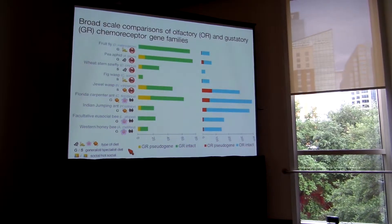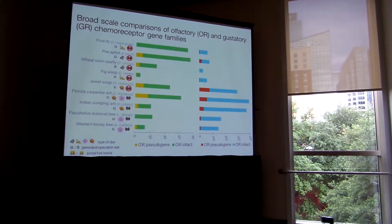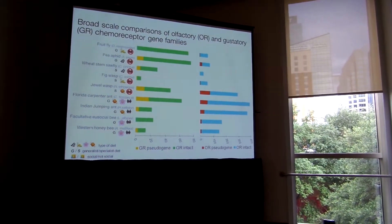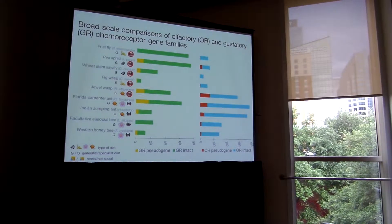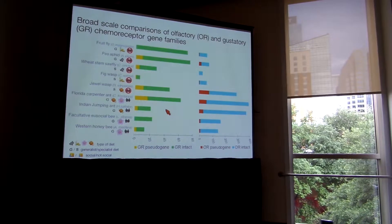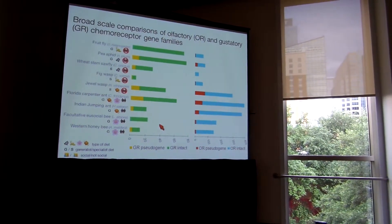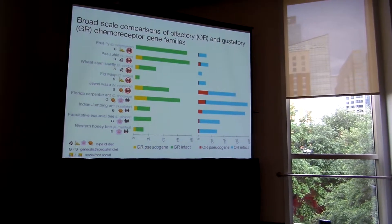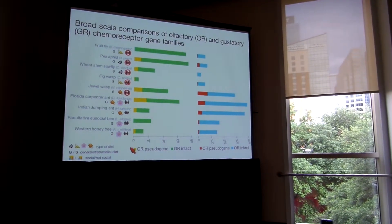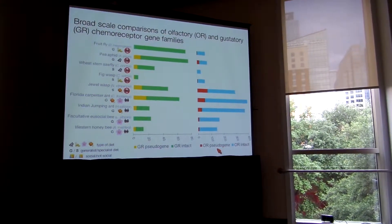I try to convey the ecological information with these figures. I consider the diet, the diversity of diet, and the sociality of each taxa. Going back to insect nectomorphs, if we compare this group, you see that although they all have this resource in common, there isn't really any pattern in the size of their gene families, the proportion of olfactory receptors, or the proportion of pseudogenized genes.